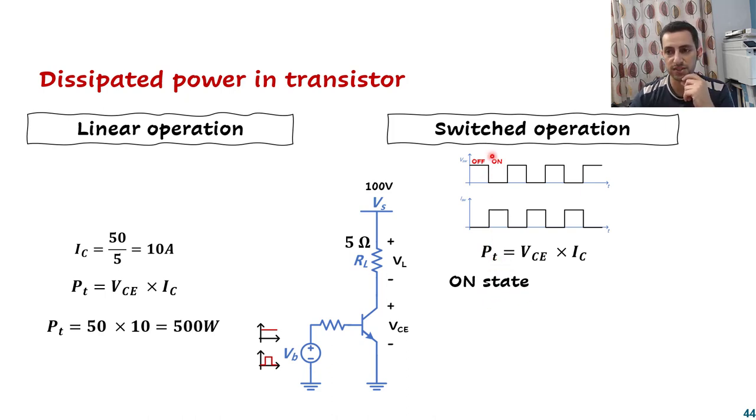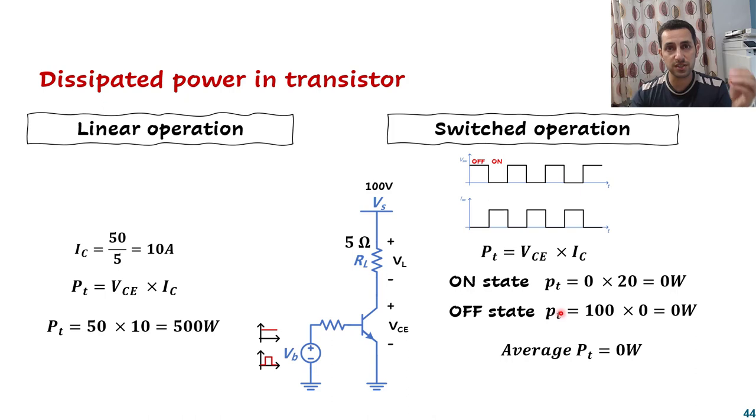Now in the ON state, look at the ON state here. The V_CE is zero, and if I multiply the zero by the current, which is any value, it will be zero watt. In the OFF state, the voltage has a value, but the current doesn't have a value. That means also the power dissipated is zero. I'm writing here the power as a small letter because I'm concerned about that time, the ON state and OFF state. I call this p small as instantaneous power. The P capital is the average power. So the p small over that duration of ON state is zero. The p small instantaneous power over the OFF state is zero. So as average, the total power dissipated by this transistor during the ON and OFF will be also zero.